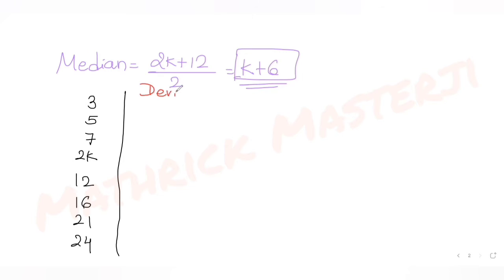Finding the deviation about the median, deviation is the absolute value of the difference of the terms. I know k + 6 has to be somewhere between 2k and 12 because it's the median of these two numbers. So k + 6 is greater than all the earlier terms. To find the deviation, I'll do k + 6 minus each term.